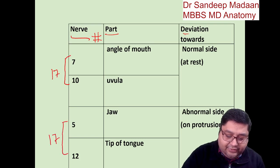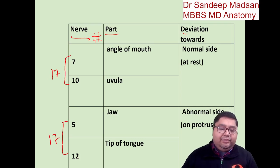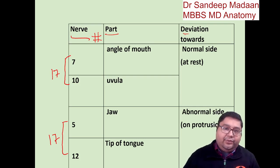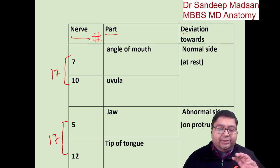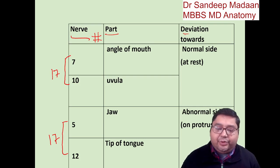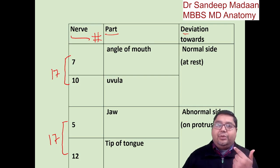The number 17 itself has no significance — the significance is that the behavior of cranial nerve 7 will be just like cranial nerve 10, and the behavior of cranial nerve 5 will be just like cranial nerve 12. So these form two groups with similar behavior.